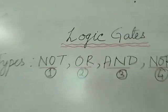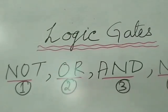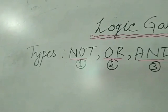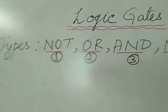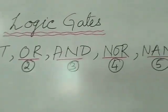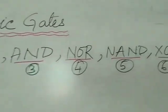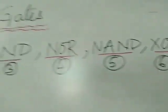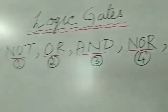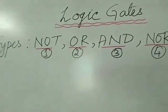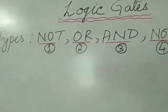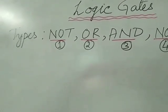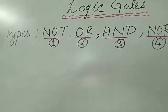The next topic is logic gates. These logic gates are of the following types: NOT gate, OR gate, AND gate, NOR gate, NAND gate, XOR gate, and XNOR gate — 7 types in total. We'll deal with each gate separately by examining the truth table as well as the circuit diagram for each.